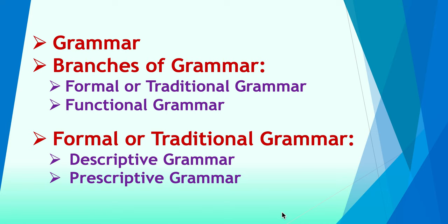Branches of grammar has two parts: formal or traditional grammar and functional grammar. Formal or traditional grammar further has two levels — the first is descriptive grammar and the second is prescriptive grammar.